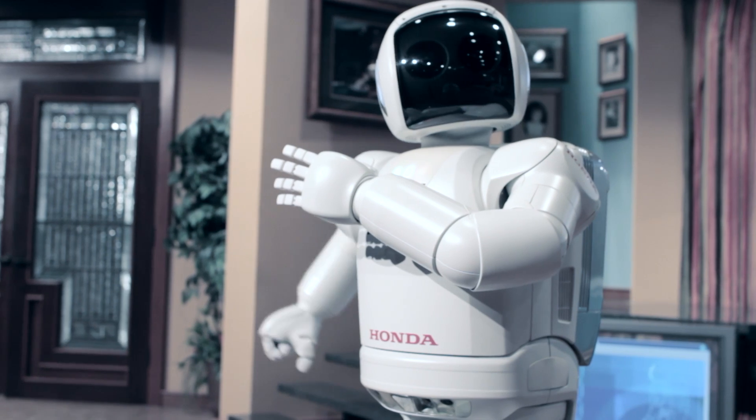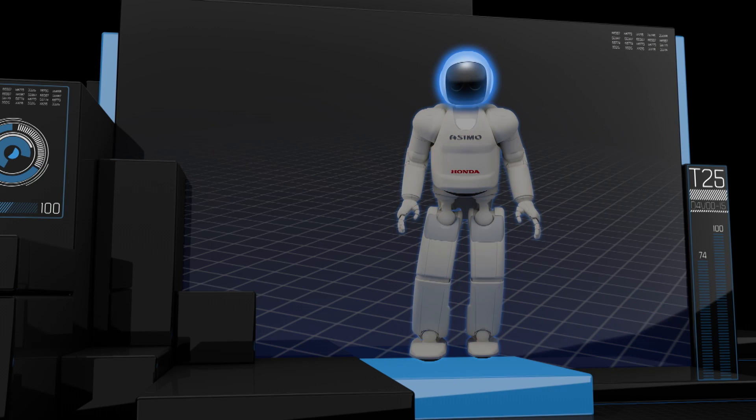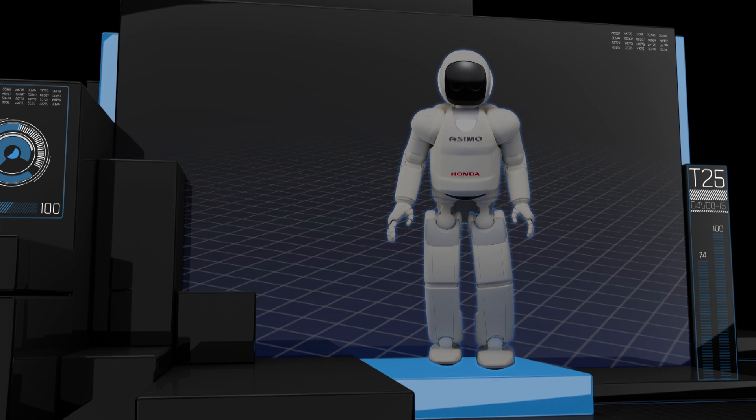This expansive interdisciplinary approach provides ASIMO with 34 degrees of freedom, meaning it can move flexibly at the head, hips, knees and ankles.